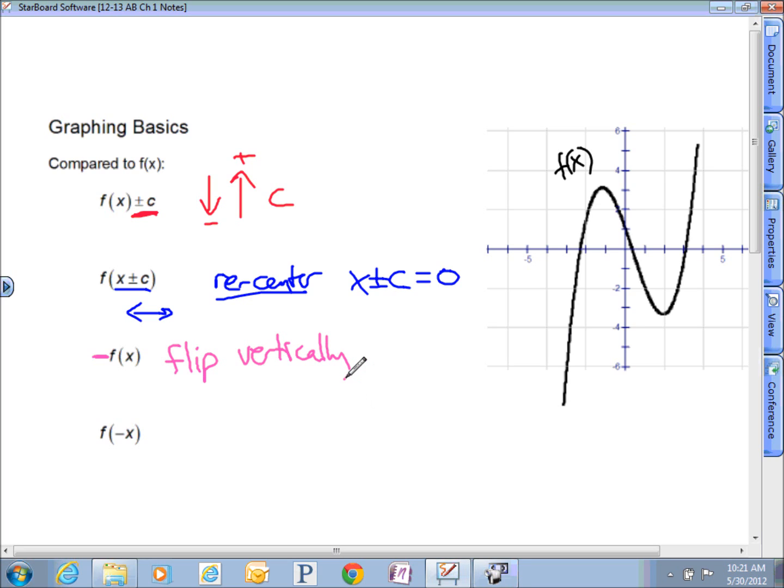What happens with my little negative on the variable? This one's now going to flip it horizontally.